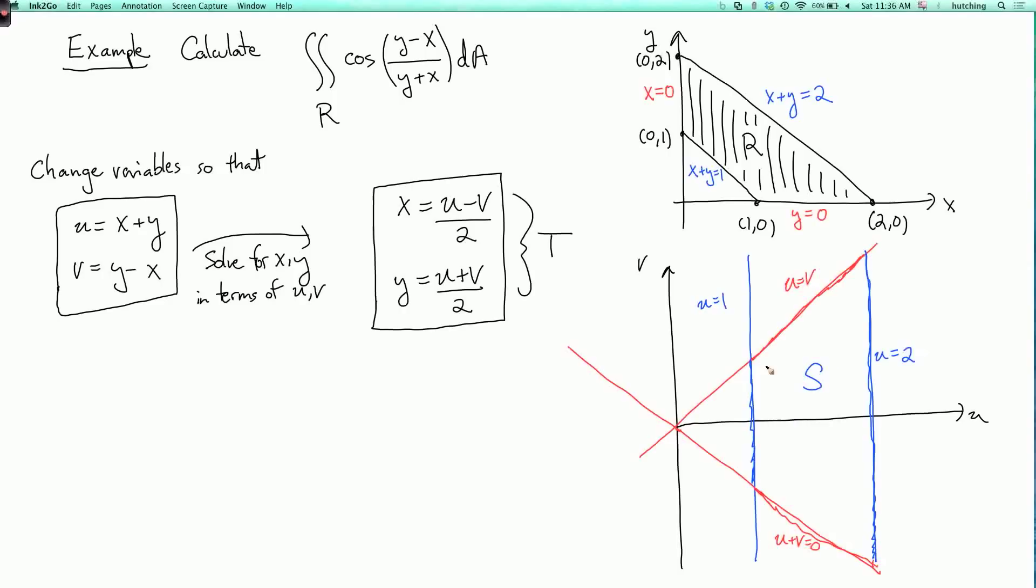If we're being careful, we should check carefully that our transformation is a bijection. But actually, you can see that because I can solve for x and y in terms of u and v, and conversely, I can solve for u and v in terms of x and y. So that means that each x, y corresponds to exactly one u and v, and vice versa. So it is a bijection. And we figured out that this region R corresponds to this region S.